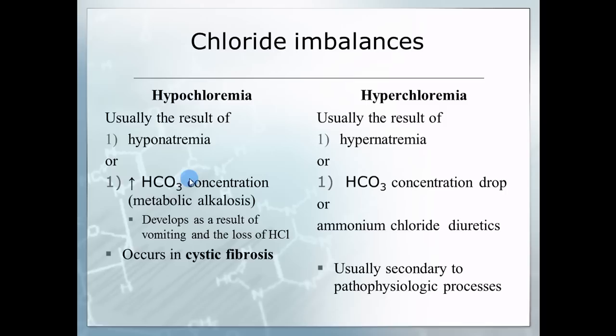Chloride also relates to acid-base balance. When bicarbonate (HCO₃⁻) increases in the blood, chloride leaves to maintain electrical neutrality. So hypochloremia is often associated with increased bicarbonate and metabolic alkalosis. Conversely, a drop in bicarbonate leads to a rise in chloride. Another cause of hyperchloremia is taking too many chloride diuretics, loading the body with excess chloride.